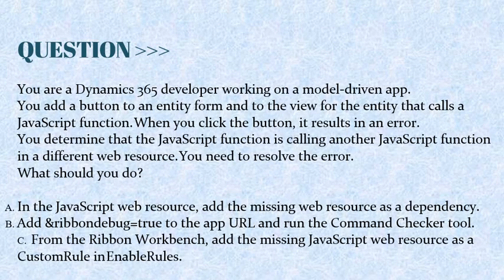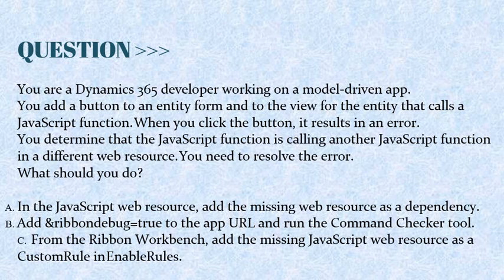Our next question is: you are a Dynamics 365 developer working in a model-driven app. You add a button to an entity form and to the view for the entity that calls a JavaScript function. When you click the button, it results in an error. You determine that the JavaScript function is calling another JavaScript function in a different web resource. You need to resolve the error. What should you do? Option A: in the JavaScript web resource, add the missing web resource as a dependency. Option B: add ribbondebug=true to the app URL and run the command checker tool. Option C: from the Ribbon Workbench, add the missing JavaScript web resource as a custom rule in enable rules. The correct answer is Option C.